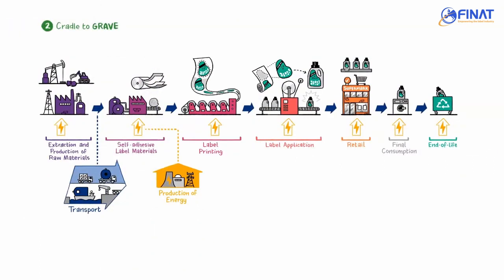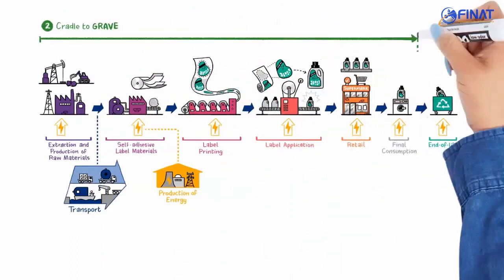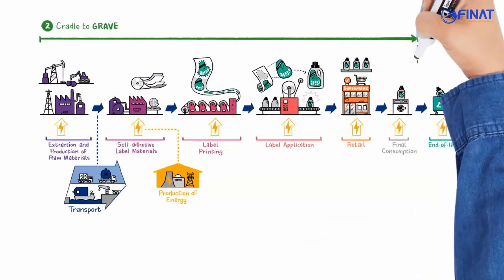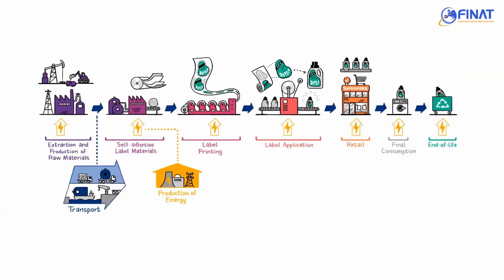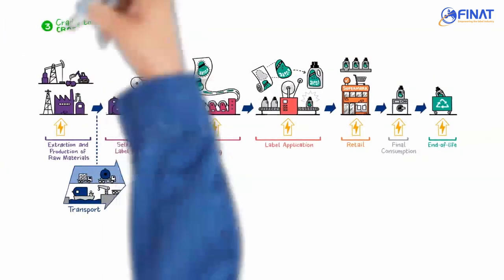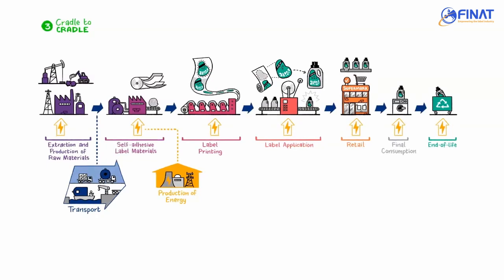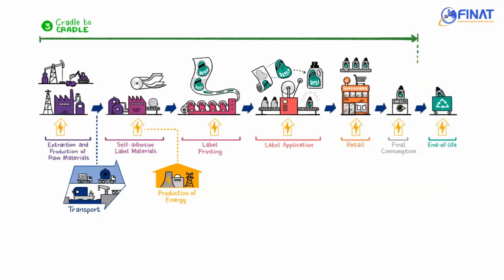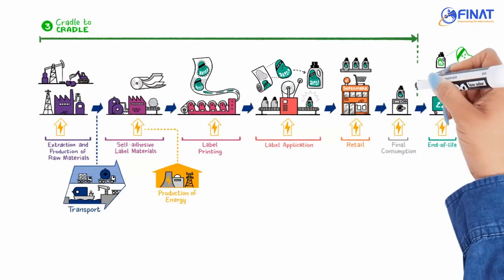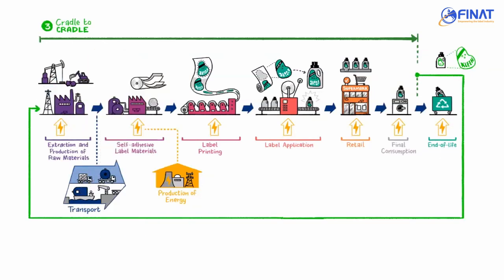Cradle to Grave includes further information on what happens to the product after it is produced and how it is disposed of at the end of the product life. Cradle to Cradle evaluations consider a process where some or all of the components are recycled for use as new raw materials for the same product. This includes many of the same steps as the Cradle to Gate scenario all the way to end use of the final product, and additionally the steps involved with recycling the final product back into raw materials.